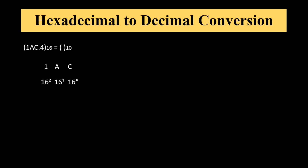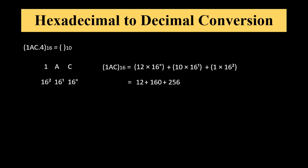So we can write hexadecimal number 1AC equal to 12 times 16 to the power 0. In the hexadecimal number system, 12 represents C, so we take 12. Then it will be added with 10 times 16 to the power 1 — A means 10 — plus 1 times 16 to the power 2. That means 12 plus 160 plus 256, equal to decimal number 428.